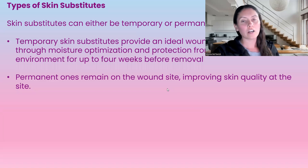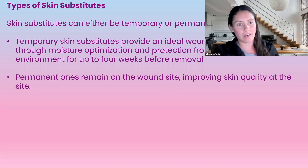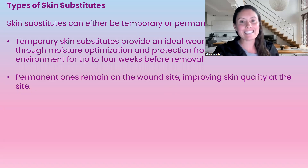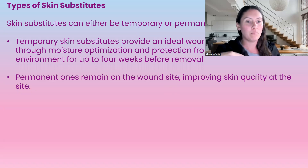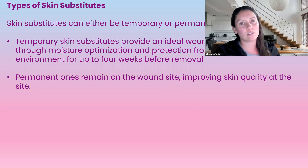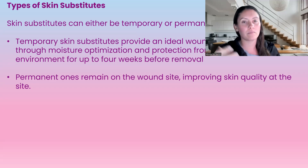There are two different types of skin substitutes: temporary or permanent. The temporary skin substitutes provide an ideal wound environment for up to four weeks — they protect the wound bed and provide moisture to that area for up to four weeks, and then need to be removed. The permanent ones remain on the wound site, improving skin quality at that site.